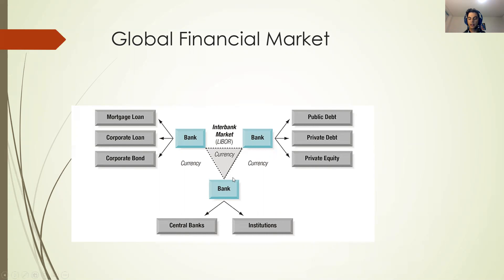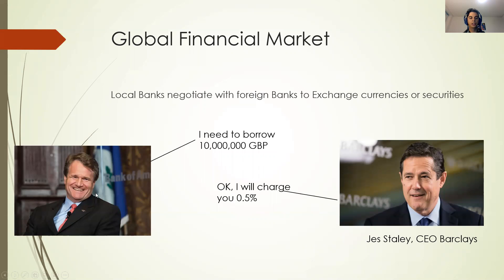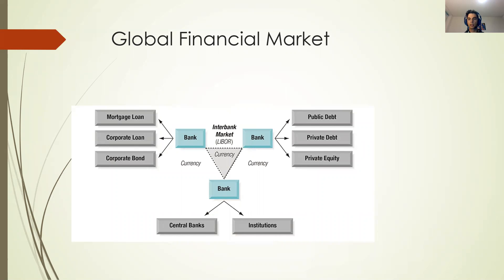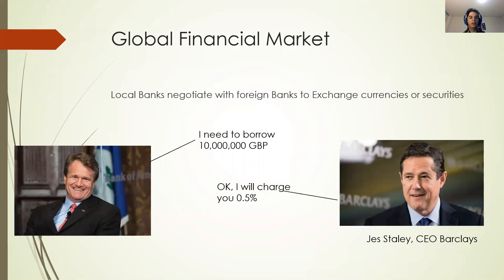In this example, this guy is going to charge this other guy 0.5%, and that is an interest rate. This interest rate is the cheapest interest rate that you will find in the world. The main reason is because both parties are super rich banks — they have the money to pay each other back, and banks need to pay back their debts or they wouldn't exist. So the risk of not being repaid is extremely low.